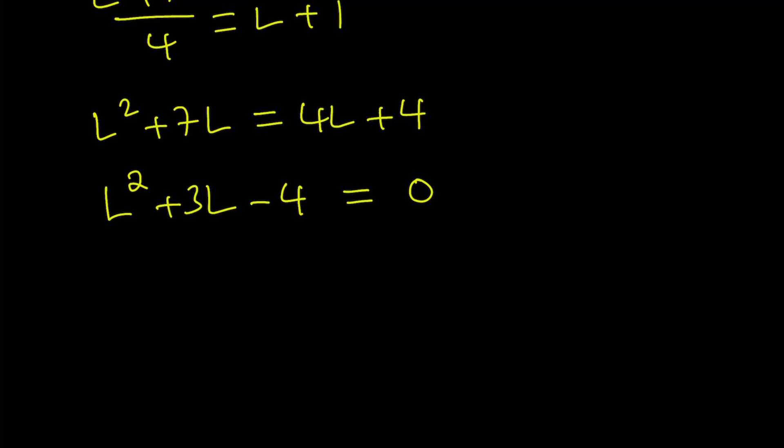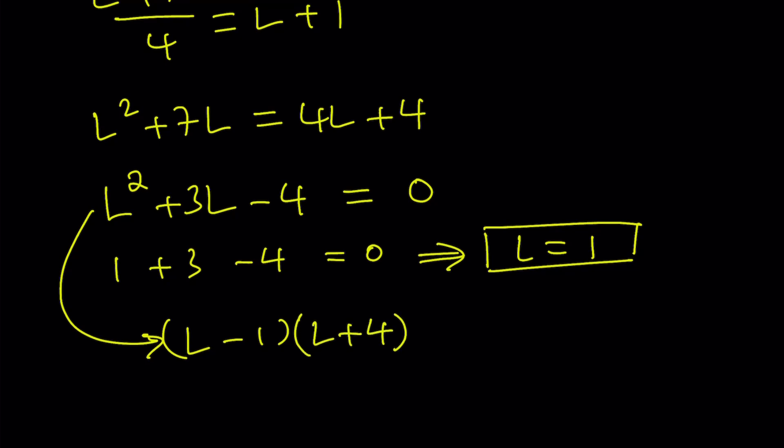When you have a polynomial whose sum of coefficients equals 0, then 1 is a solution. If you look at the coefficients 1 plus 3 minus 4, we get 0. That indicates L equals 1 is a possible solution. This is a factorable trinomial, so we can write it as L minus 1 times L plus 4 equals 0. The fact I used to factor it was finding two numbers whose product is negative 4 and whose sum is 3, which are 4 and negative 1.